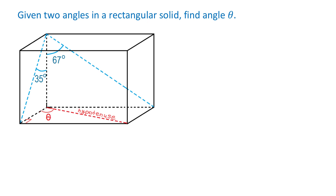To find an angle inside a right triangle, we can use trigonometric functions. For example, sine of angle theta equals the opposite side divided by the hypotenuse. Cosine of angle theta equals the adjacent side divided by the hypotenuse. And tangent of angle theta equals the opposite side divided by the adjacent side.